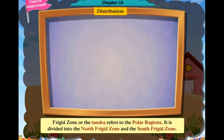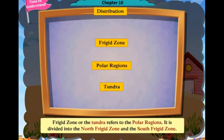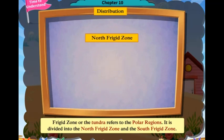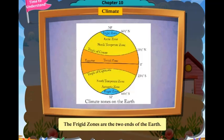The frigid zone, or the tundra, refers to the polar regions. It is divided into the north frigid zone and the south frigid zone. The frigid zones are the two ends of the earth.